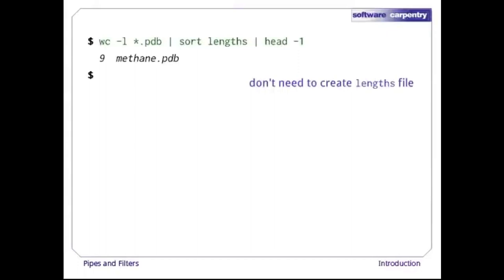We can use another pipe to send the output of wc directly to sort, which then sends its output to head. This is exactly like a mathematician nesting functions and saying the square of the sine of x times pi. In our case, the calculation is: head of sort of word count of *.pdb.